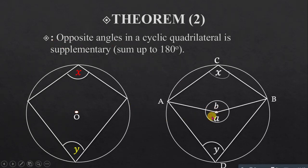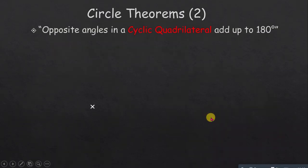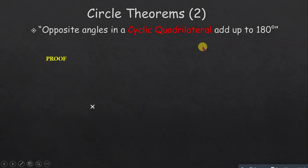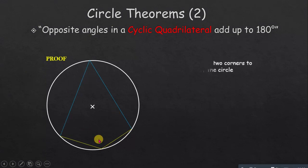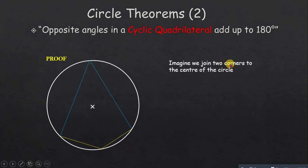To prove that opposite angles in a cyclic quadrilateral add up to 180 degrees, we draw the quadrilateral inside a circle and state that the opposite angles sum to 180 degrees. Imagine we join two corners to the center of the circle.